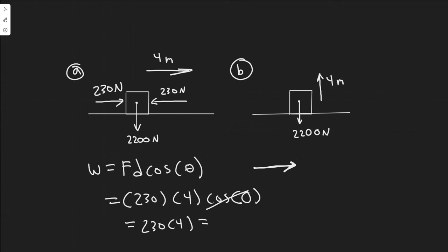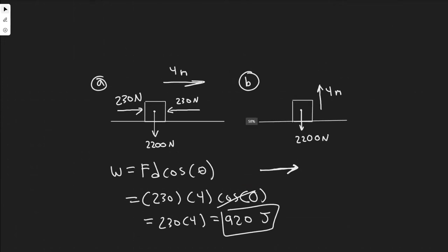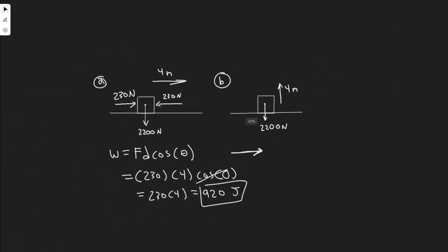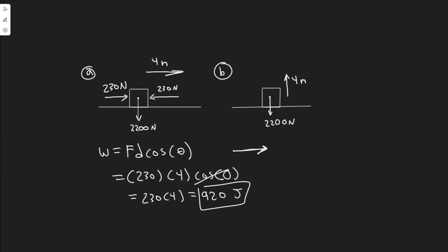And so if you do that, 230 times 4, you'll get 920. And as I said before, the unit for work is joules. So for scenario A, it's going to be 920 joules. That's going to be the amount of work required to move it.